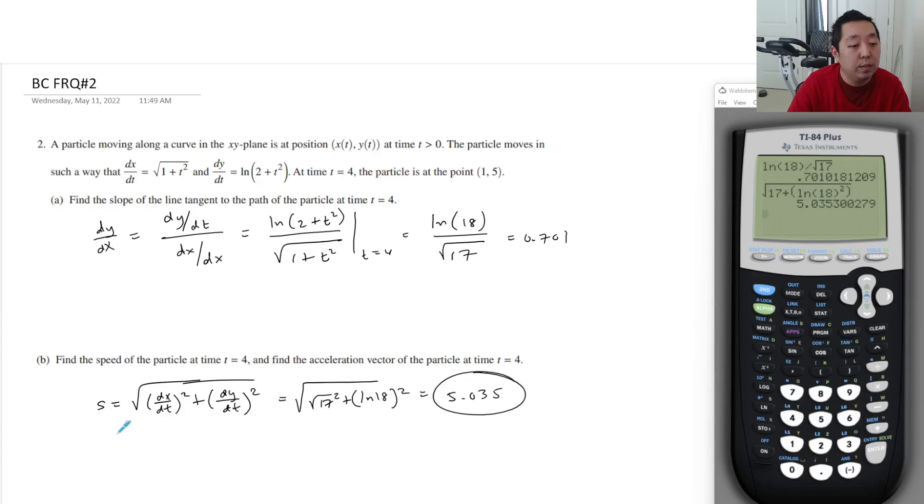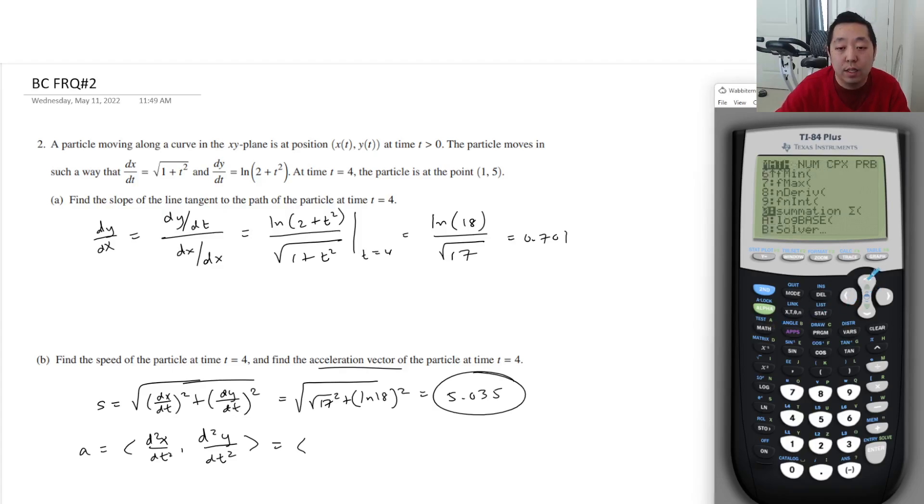And then they want you to find the acceleration vector. Acceleration vector is just simply the second derivative, which is really the first derivative of this guy. So I would do math n derivative of x at of y1. Let's do y1, this is my x—wait, y1 was my x coordinate.